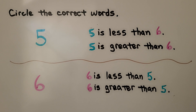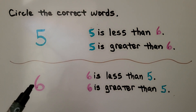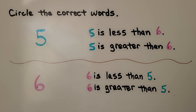Sam wants to know which number, five or six, is greater and which number is less. Here we have five and here we have six. How can he find out? He can use counting order. Five is less because it comes first in counting order, and six is greater because it comes after five in counting order.